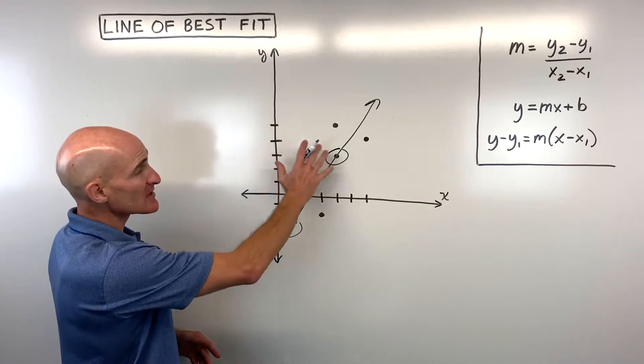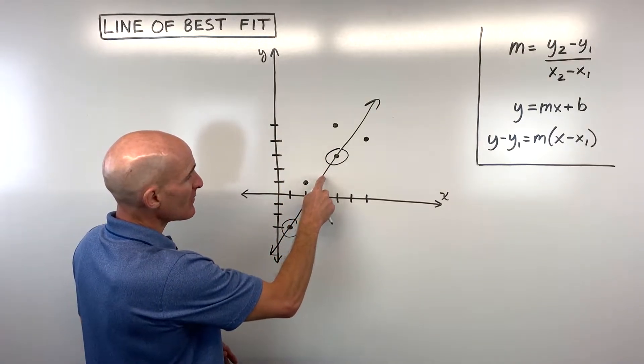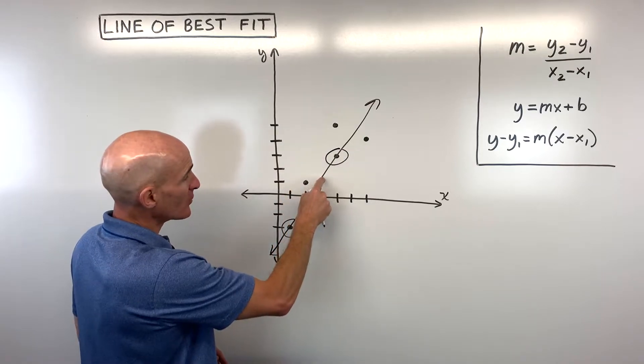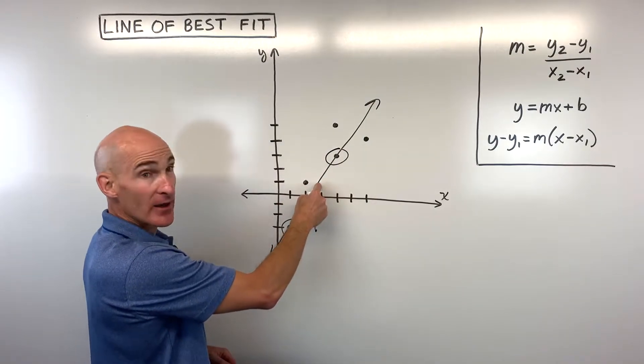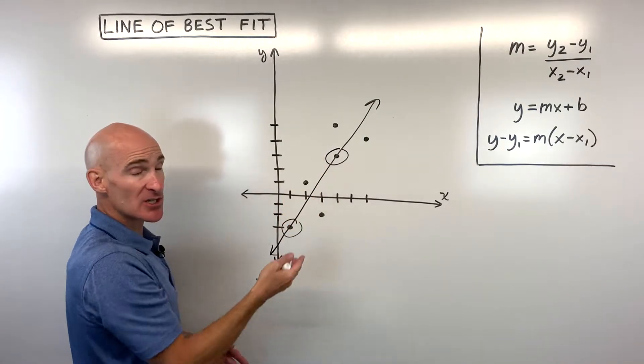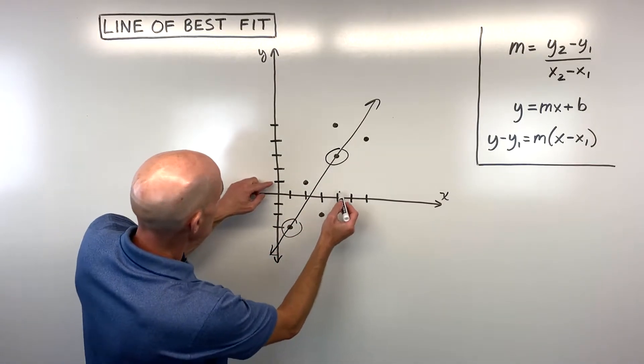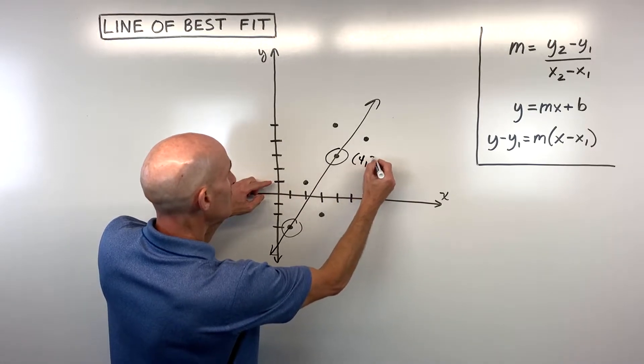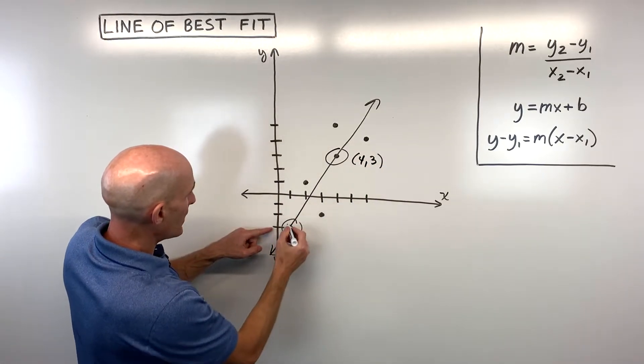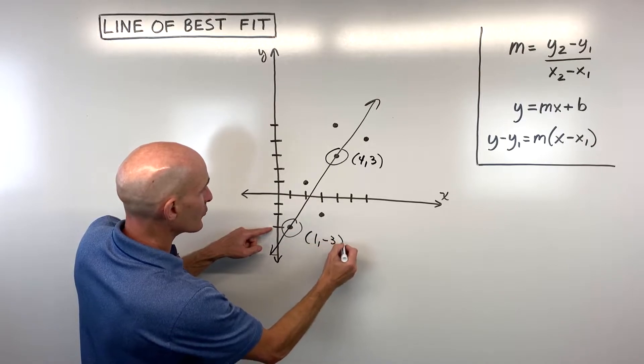Now, if you're doing this on graph paper, you might say, well, it looks like my approximate line of best fit is going through this point, maybe three, one. And you can use that point, even though it doesn't represent one of your data points. But in this case, for this example, let's use this point here, which is at four comma three and one comma negative three.